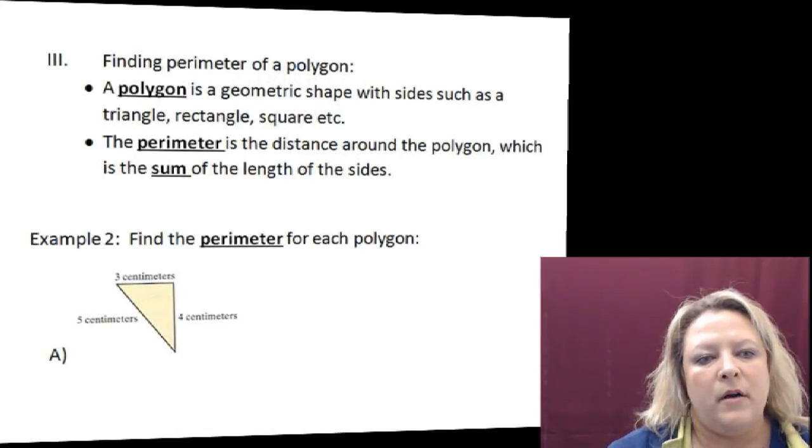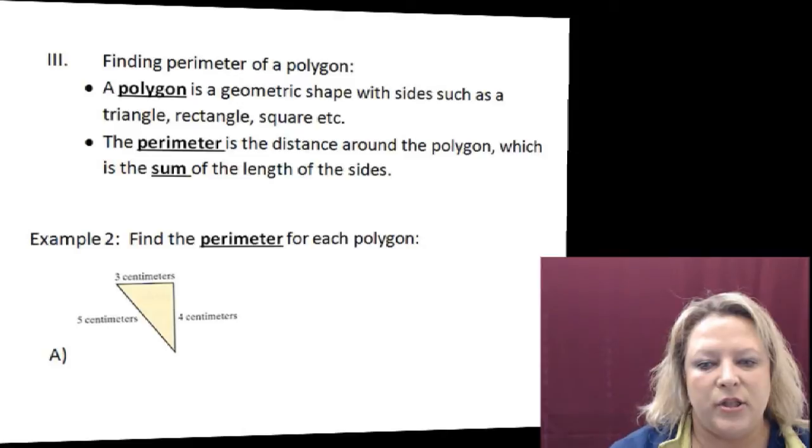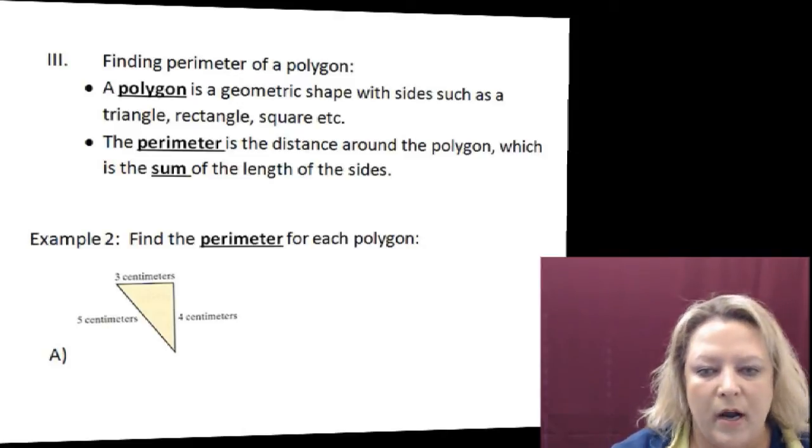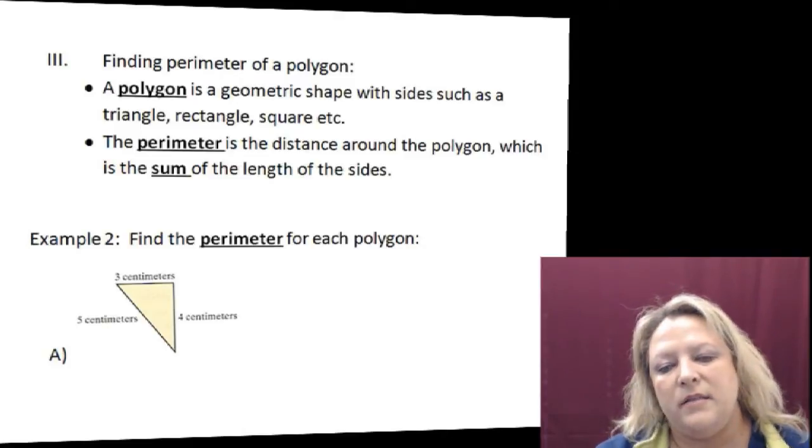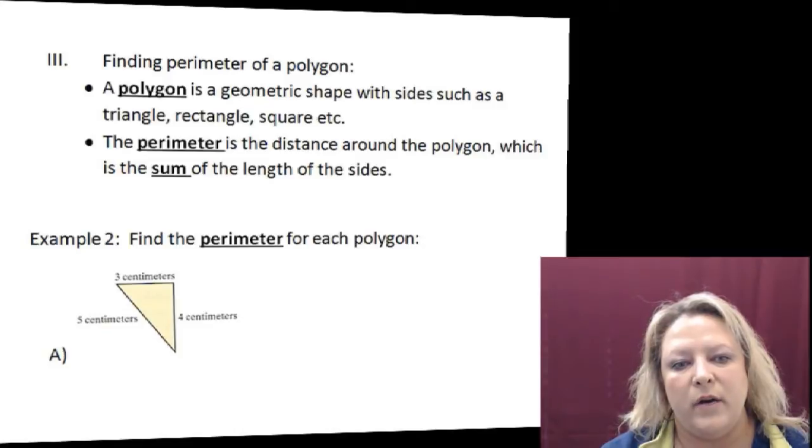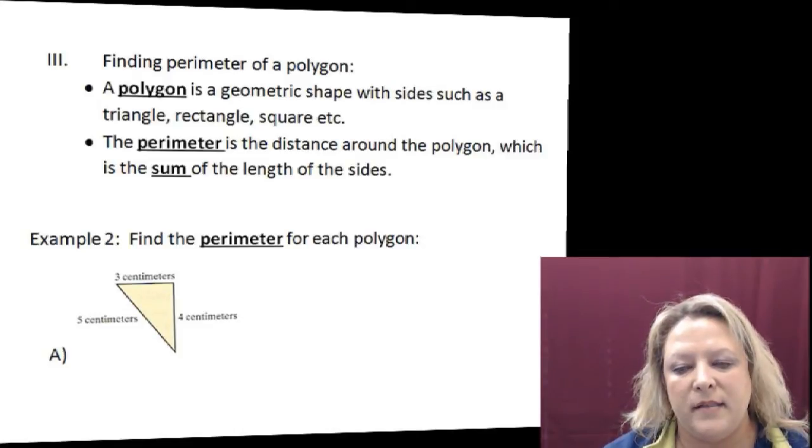When we talk about perimeter, we talk about geometric shapes, squares, rectangles, triangles, etc. To find the perimeter, that means we are going to find the distance around the outside edges of whatever the shape may be.